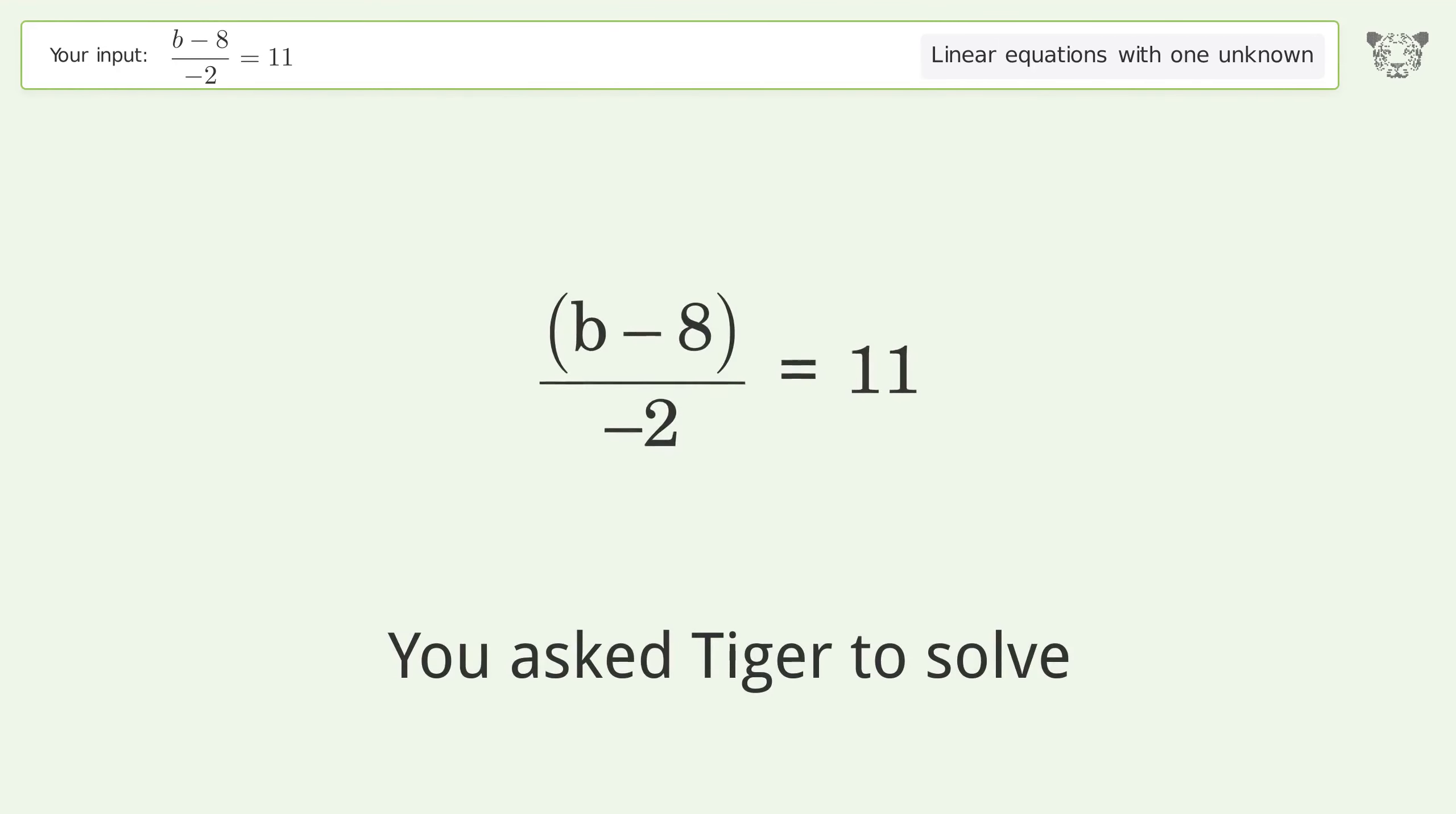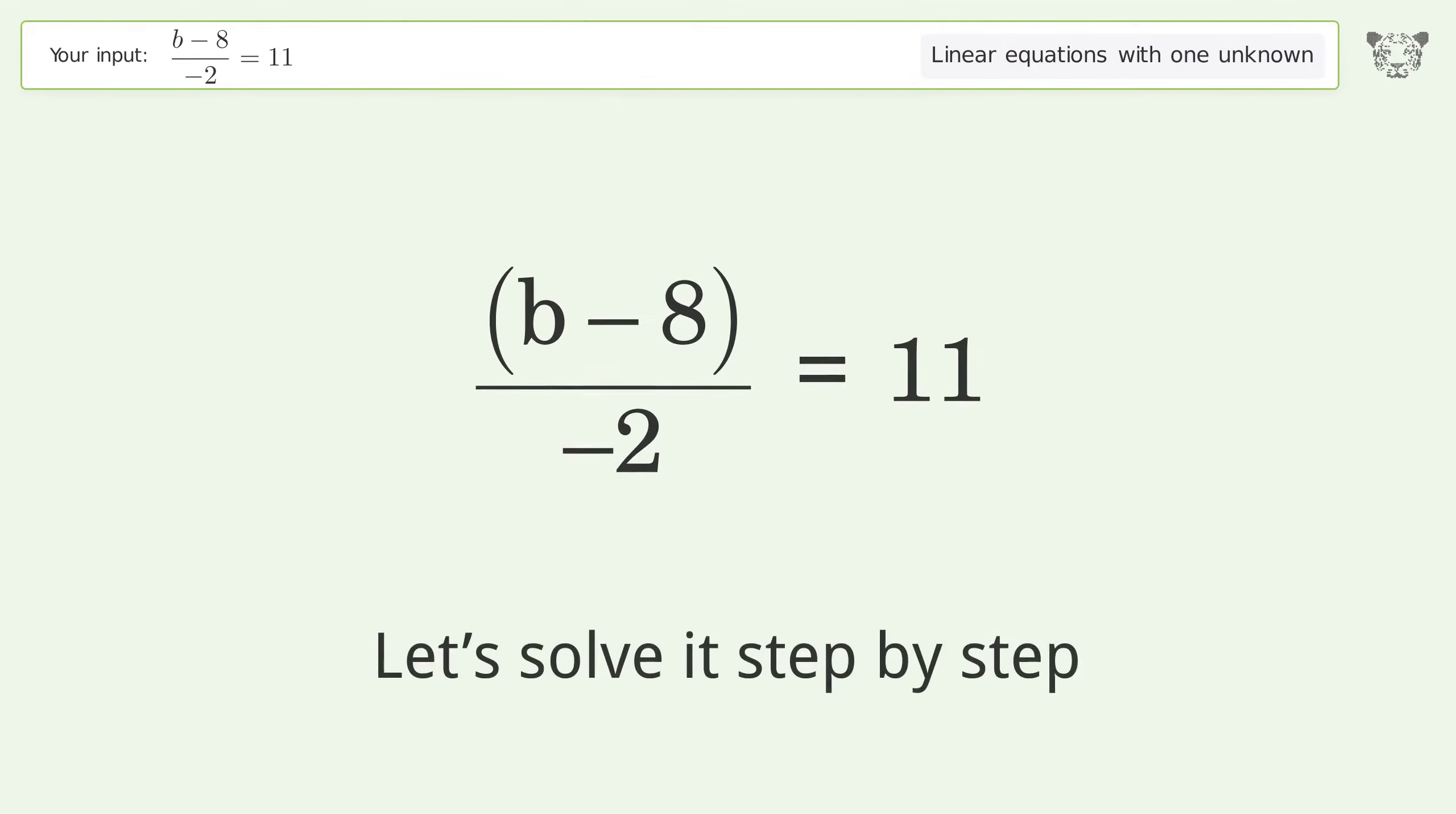You ask Tiger to solve this. It deals with linear equations with one unknown. The final result is b equals negative 14. Let's solve it step by step. Simplify the expression.